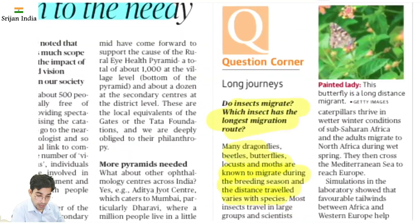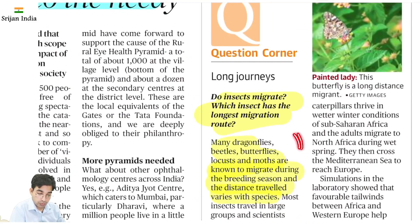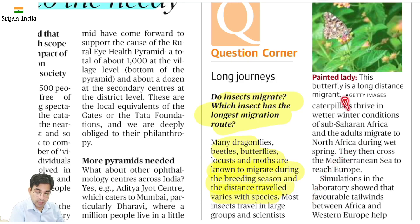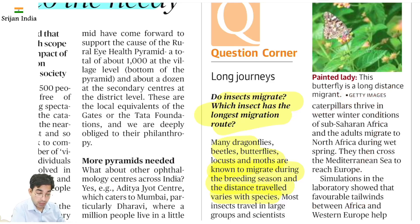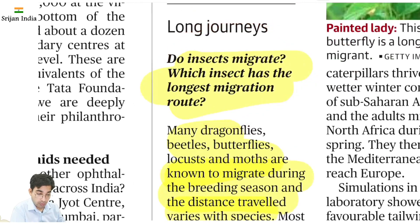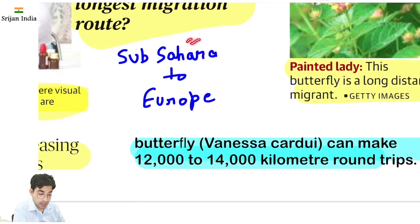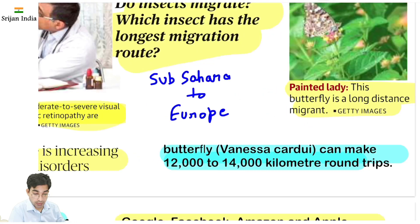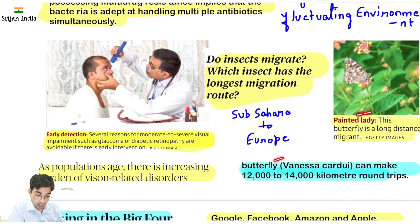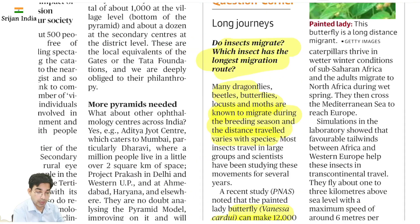Migration. Jo species hoti hain, climate change hota hai, mausam badalata hai — accordingly ek place se doosre place migrate karti hain, jaise bahut saari birds Central Asia se Andaman, South mein migrate karti hain. Ye butterfly hai — 'Painted Lady' — jo migrate karti hai. Sub-Saharan Africa se migrate karke ye Europe tak jaati hai — 12,000 se 14,000 kilometer ki round trip karti hai.